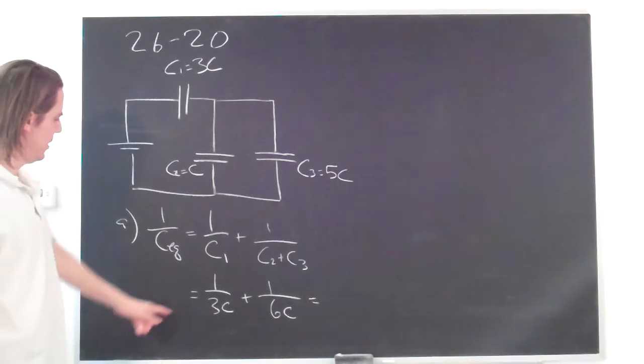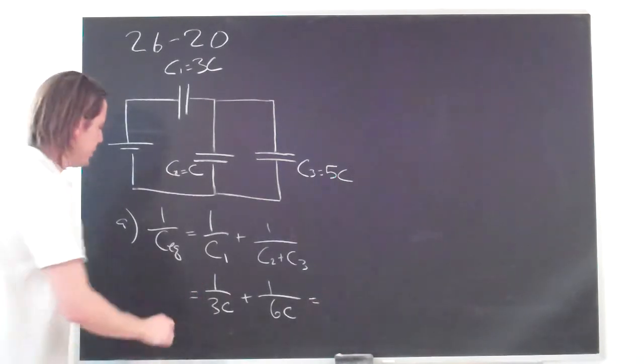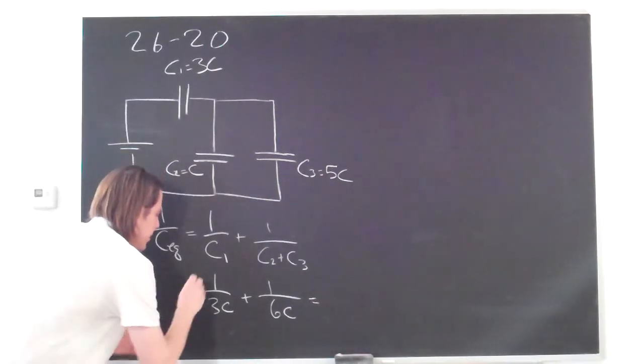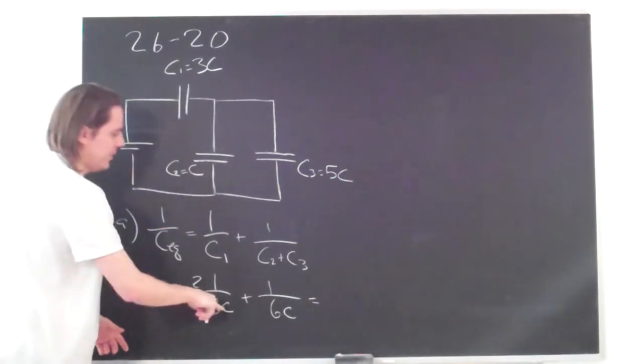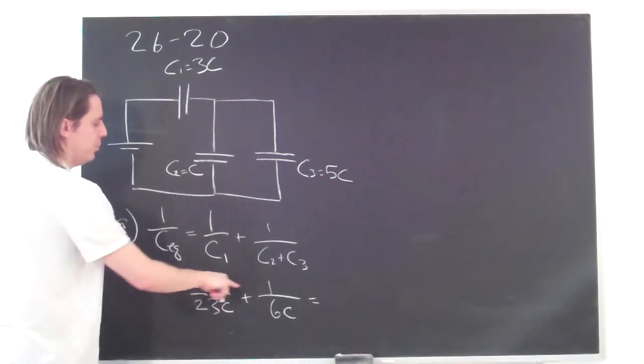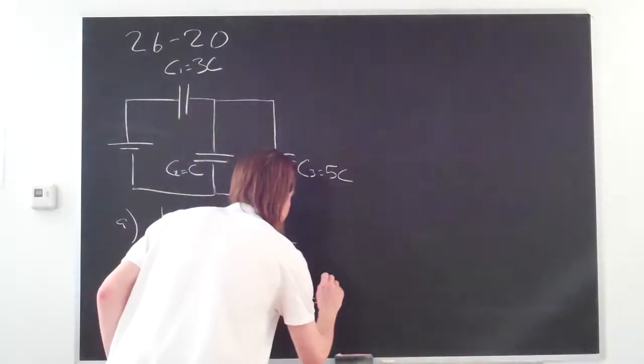And what is that? We multiply this by 2 over 2 to get a common denominator. That's 6C, 6C, so 2 times 1 is 2 plus 1 is 3. So it's 3 over 6C.